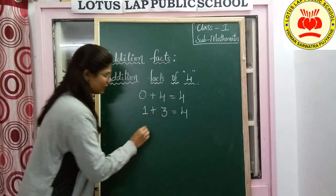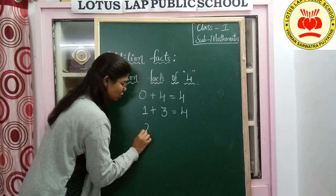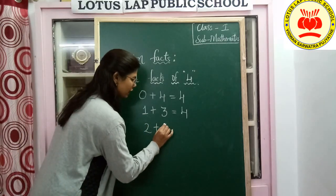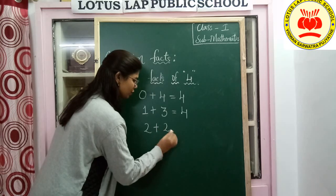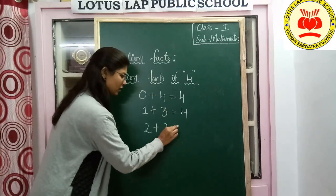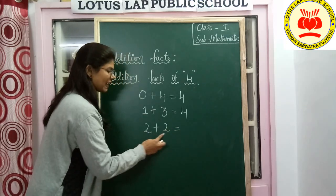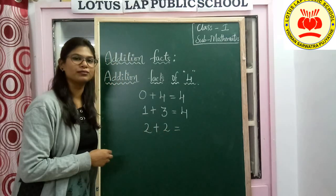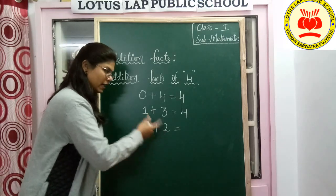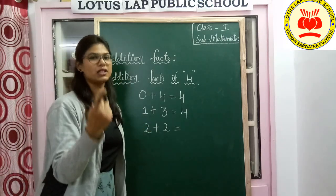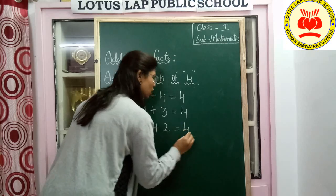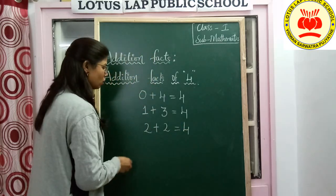Now let's take 2. Here also it will be 2. Why? Because here the first number is in increasing order and the second number is in decreasing order. 2 plus 2 — what will be the result? Start at 2, take 2 fingers: 3, 4. The answer we got is 4.